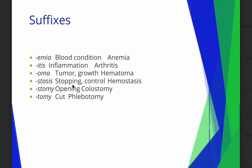Stasis means to stop. Hemostasis — there's that hemo, which means blood. So hemostasis means stopping or controlling blood. That's what you do as a phlebotomist: after you draw blood, you take a gauze and put it over the area where you drew blood, controlling or stopping the blood. That process is called hemostasis. Please know that.